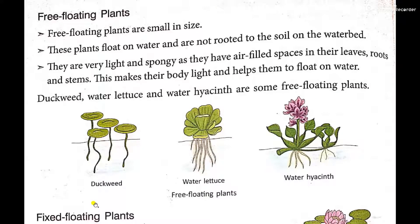Let's begin with free floating plants. Free floating plants are small in size. These plants flow in water and are not rooted to the soil on the water bed. Their roots also float in the water. They are very light and spongy. These are special adaptations which allow them to float freely in water — they have light, spongy stems and their leaves, stems, and roots are filled with air spaces.